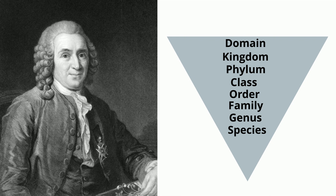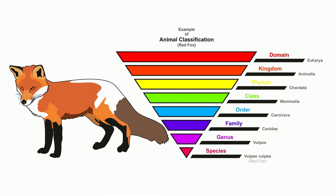You will often see the levels displayed like a triangle. This is because the levels at the top are broad and general, whereas the levels at the bottom are more specific. As you move down levels of taxonomic classification, the organisms will be more similar to one another.